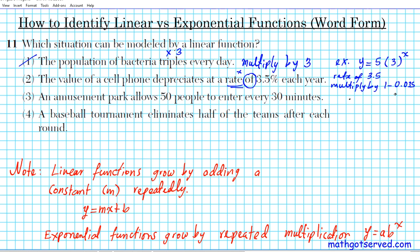So what kind of function is this if you multiply by 1 minus 0.035 over and over again? Is that linear or exponential? Since it's repeated multiplication, this is an exponential function. So this is not what we're looking for. Let's take a look at an example of option two. What kind of function could represent option two?